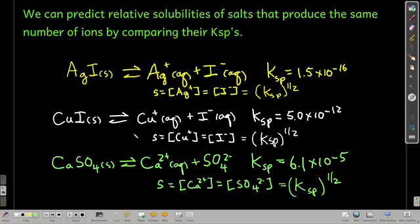And the same thing for copper I iodide, because it's one-to-one, the solubility is just going to be the square root of KSP. And for calcium sulfate, because it breaks apart into two ions, the solubility is equal to square root of KSP. And so the smaller the KSP, the smaller the square root of KSP, the smaller the solubility.